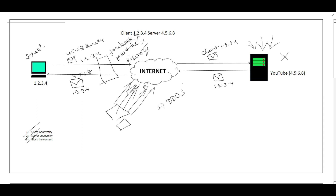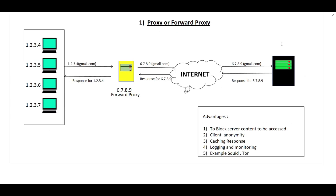Let's see in detail how a proxy works. There are two types of proxy: the first is a forward proxy, and the second is a reverse proxy. In a forward proxy, we have a group of clients pointing to the forward proxy. Each client request goes to the forward proxy, and all requests from the forward proxy are forwarded to the internet. For example, if client 1.2.3.4 wants to open Gmail, it sends a request to the forward proxy along with its own IP address.